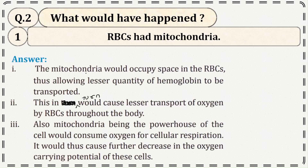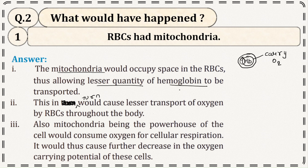What if mitochondria were present in RBC? The mitochondria would have occupied space in the RBC. In RBC, hemoglobin carries oxygen. Mitochondria occupying space would allow lesser quantity of hemoglobin to be present, resulting in less oxygen transport by RBC through the blood.